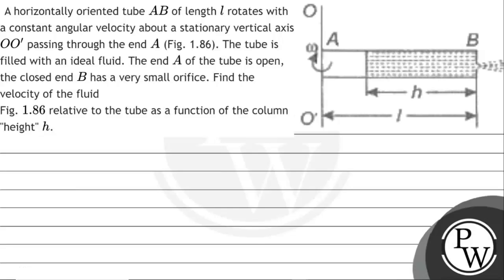Let's read the question. A horizontal oriented tube AB of length L rotates with a constant angular velocity about a stationary vertical axis OO' passing through end A. The tube is filled with an ideal fluid. The end A of the tube is open. The closed end B has a very small orifice. Find the velocity of the fluid relative to the tube as a function of the column height.